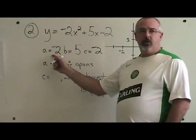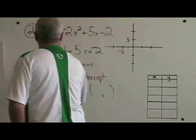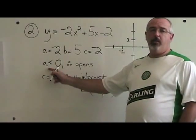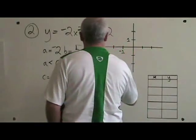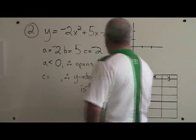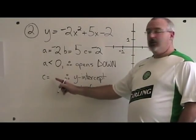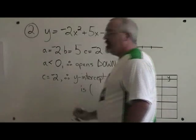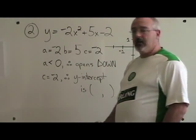a equals negative 2, so a is less than 0. When a is less than 0, our parabola opens downwards. c equals negative 2, therefore our y-intercept is (0, negative 2).